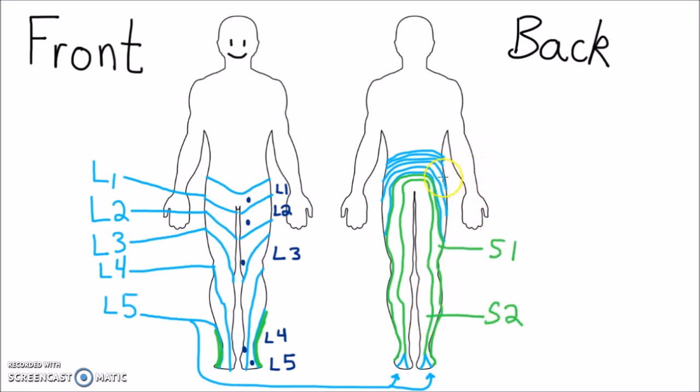S2 and S3 provide sensory information from the anterior genital region. S2, S3, and S4 provide sensation from the perineum, the area between the anus and the scrotum or vulva. S3, S4, and S5 provide sensation as concentric rings surrounding the anus.